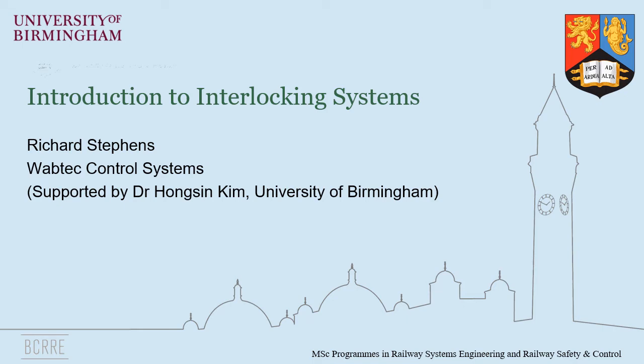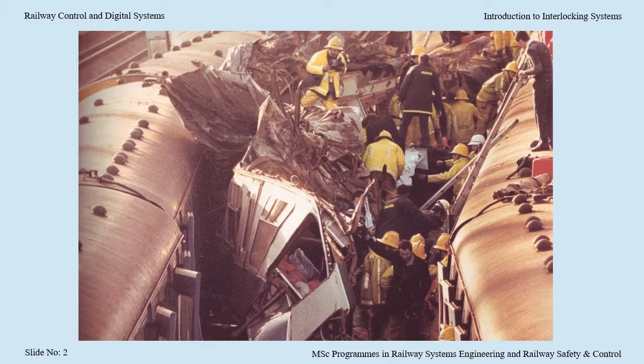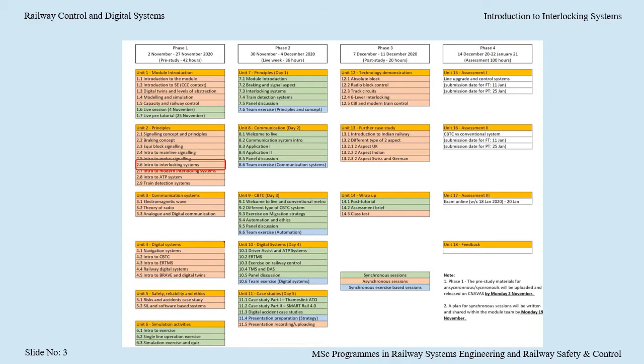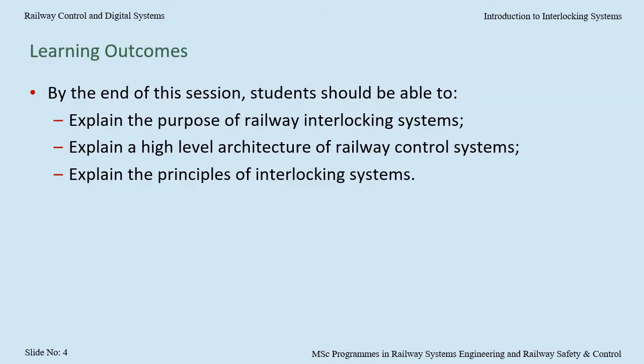Introduction to interlocking systems, or how to stop trains from colliding with stuff. This lecture is part of the pre-study for LMR 36, Railway Control Systems Engineering. We're going to talk about the risks addressed by interlockings, which is one of the main roles of interlocking systems, where the interlocking fits into the railway control system architecture, and then, at the principles level, how the interlocking mitigates each risk. At the end of the session, you should be able to explain the role of interlocking systems.